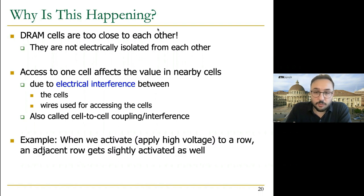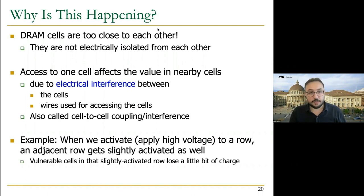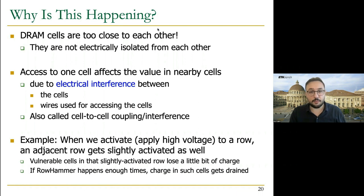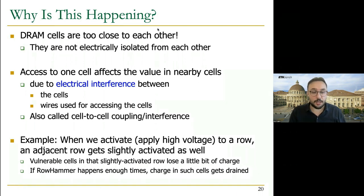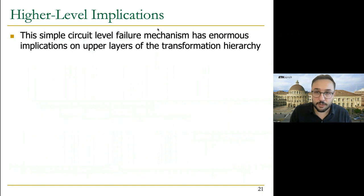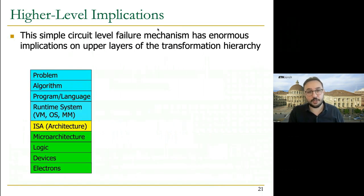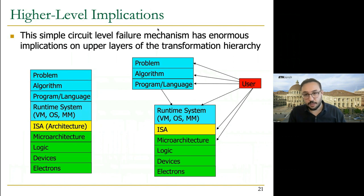When we activate or apply high voltage to a row, it activates nearby rows as well, causing them to leak some charge. When this happens many times, a cell loses its charge and causes a bit-flip. This simple circuit-level failure mechanism has enormous implications on upper layers of the transformation hierarchy, from the algorithm down to microarchitecture.